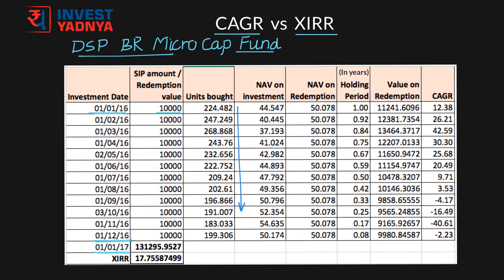When you started your investments, the NAV of the fund was 44.547. So with your 10,000 rupees on 1st of January 2016 you could acquire 224.482 units of this particular mutual fund. Based upon the NAV during your investment period of 12 months, you could acquire these number of units of this particular mutual fund.